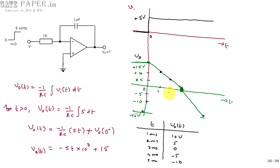The time axis is marked at 1, 2, 3, 4, 5, 6 milliseconds. This is the output waveform for the corresponding input waveform. The output is a negative-going ramp, decreasing linearly with negative slope. This is a 5-marks question from GATE 1991. Thank you.